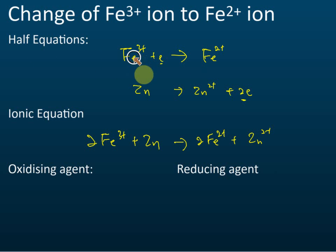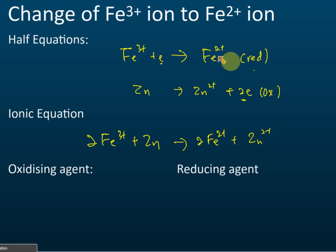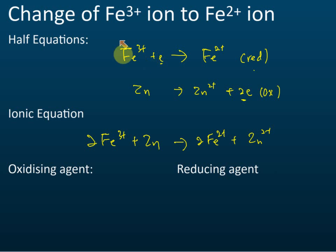From the ionic equation, identify the oxidizing agent and reducing agent. Check whether each species undergoes oxidation or reduction. Fe³⁺ to Fe²⁺ — the charge decreases from +3 to +2, so this is reduction. Therefore, zinc must undergo oxidation. The oxidizing agent is the one that undergoes reduction — that is Fe³⁺. The reducing agent is zinc.